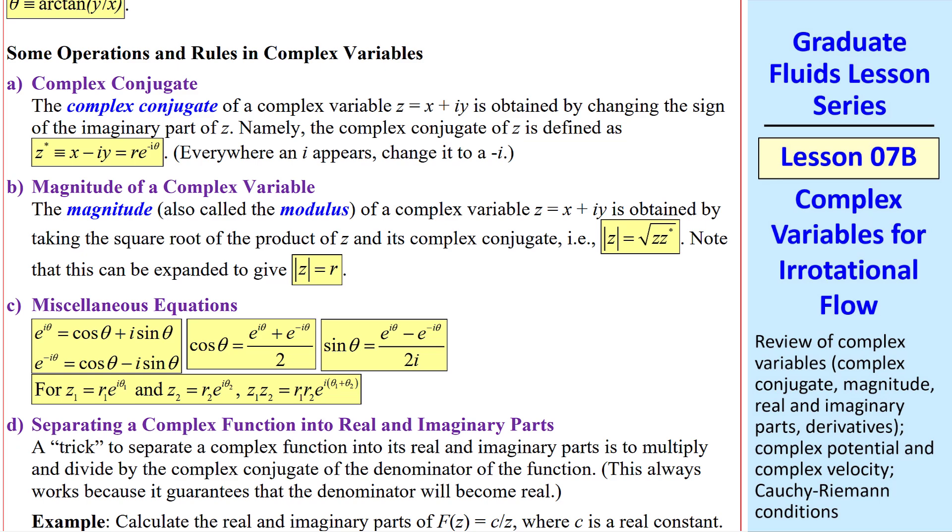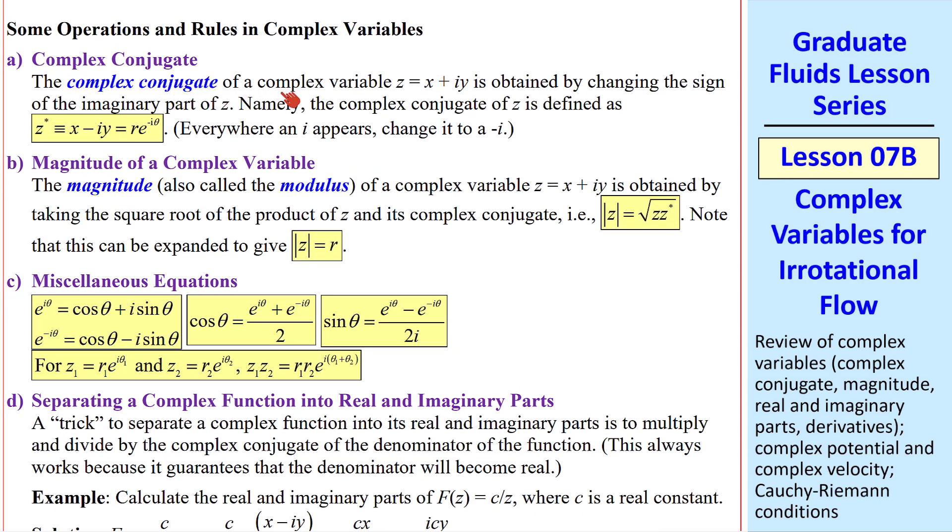Let's define some other operations and rules. Complex conjugate of z is obtained by changing the sign of the imaginary part. And we use an asterisk. So the complex conjugate of x plus iy is x minus iy. And the complex conjugate of r e to the i theta is r e to the negative i theta.